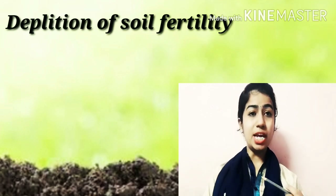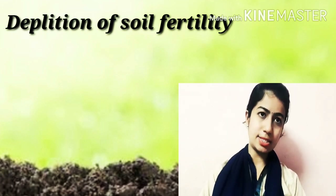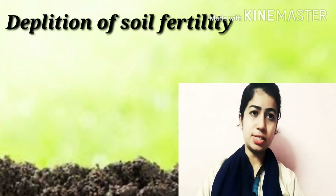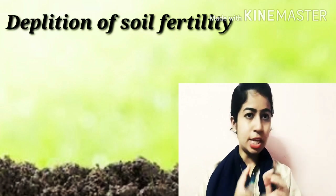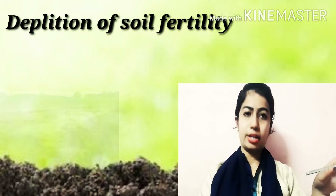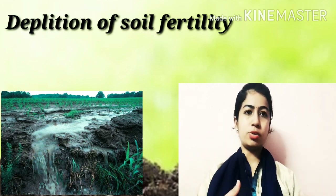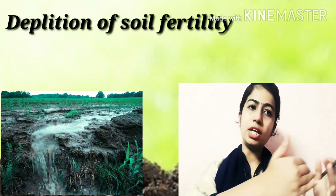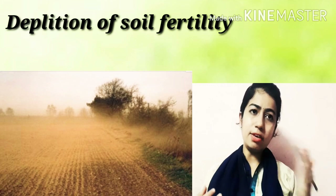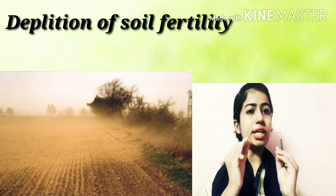The next topic is depletion of soil fertility — meaning a decrease in soil fertility. Crop cultivation depends on soil fertility. Sometimes the top layer of soil is removed due to water: flowing rainwater carries soil away with it, and strong winds can also blow soil away. This process is called soil erosion, and due to soil erosion, soil fertility decreases.